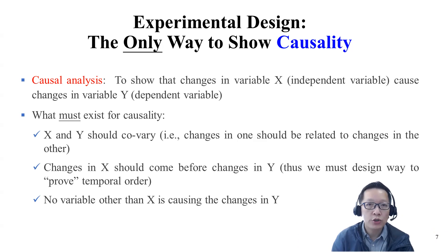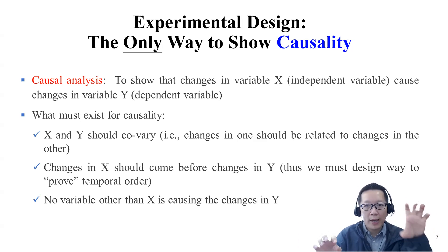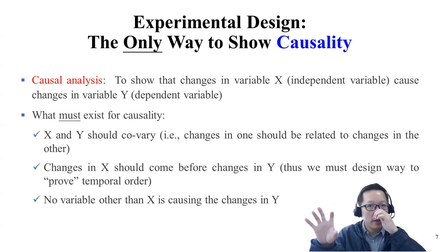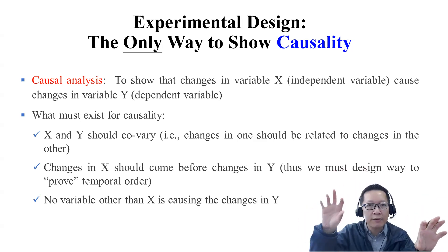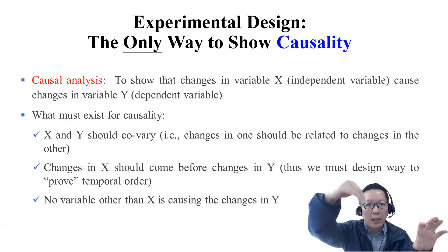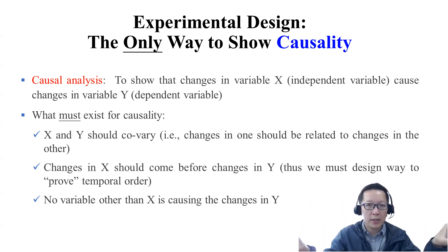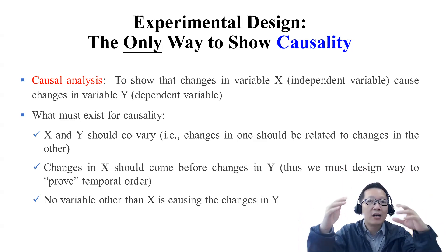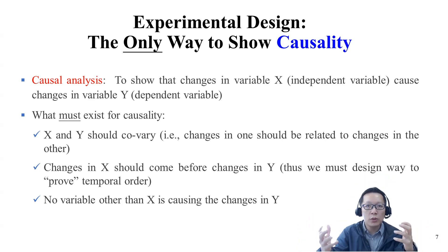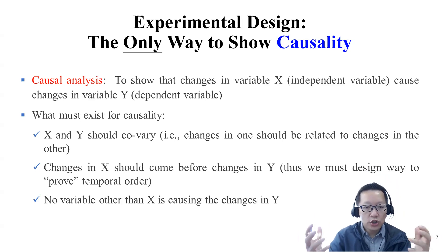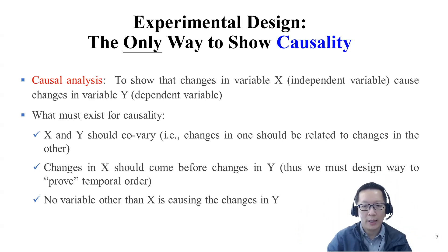Third, you are trying to ensure that there are no other variables apart from X causing changes in Y. There can always be other variables — mediating, intervening, moderating, or confounding variables — that affect the X and Y relationship. But the purpose of testing causality in experiments is to ensure that changes in Y are only caused by X.